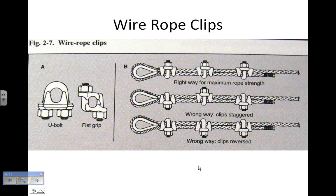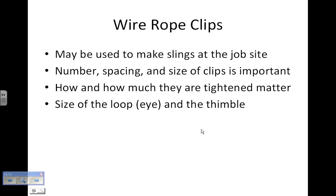Here's a graphic showing another common way to put terminations on a wire rope — using clips. There are a couple of different types, but they both accomplish the same thing. There is a right way and a wrong way to attach the clips for maximum strength. The top one shown is the right way; the two bottom ones are wrong. These can be used to make slings on the job site, and how many clips you use, how they're spaced, and their size all matter — specifications are given by the manufacturer.